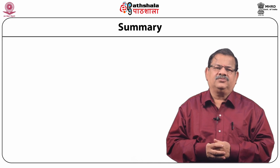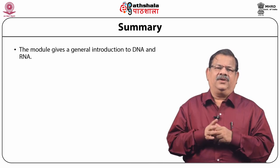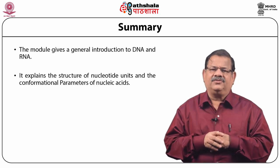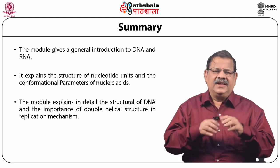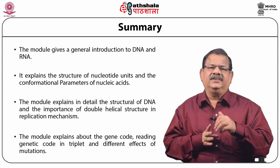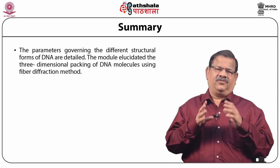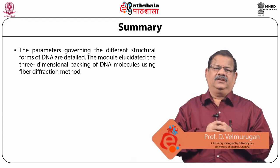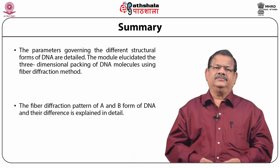Let us summarize what we have learned in this module. This module gives a general introduction to the deoxyribonucleic acid (DNA) and the ribonucleic acid (RNA). It explains the structure of nucleotide units and the conformational parameters of nucleic acids. The module explains in detail the structure of DNA and the importance of the double helical structure in the replication mechanism. It also covered the genetic code — how to read it in triplets and the effects of different kinds of mutations. The parameters governing the different structural forms of DNA were detailed, and the three-dimensional packing of DNA molecules using fiber diffraction was elucidated, including the fiber diffraction patterns of A and B forms of DNA. Thank you.